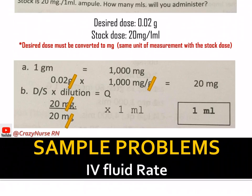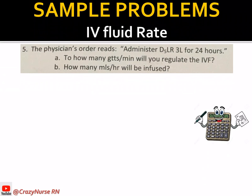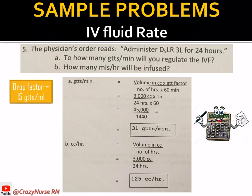For IV fluid rates: the physician's order reads administer D5LR 3 liters for 24 hours. We need to find (a) how many drops per minute to regulate the IVF, and (b) how many ml per hour will be infused. For drops per minute, the formula is: volume in cc times drop factor, over number of hours times 60 minutes.